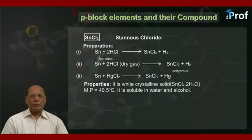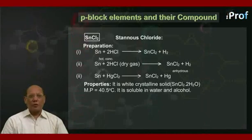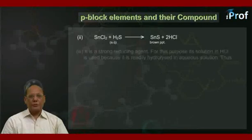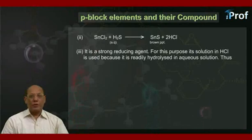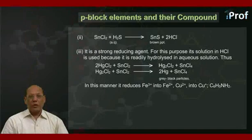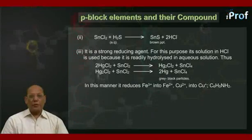Properties: SnCl₂ is a white crystalline solid, SnCl₂·2H₂O, with a melting point of 40.5 degrees Celsius. It is soluble in water and alcohol. Chemical reactions: SnCl₂ plus 2NaOH gives Sn(OH)₂ plus 2NaCl. Sn(OH)₂, being insoluble in water, comes out as a precipitate. Sn(OH)₂ further reacts with excess NaOH to form Na₂SnO₂.